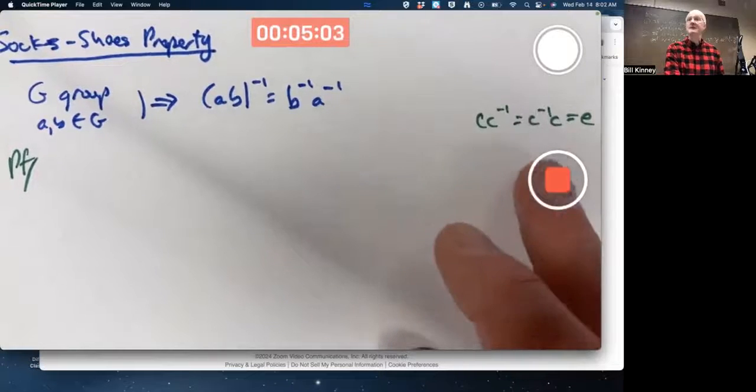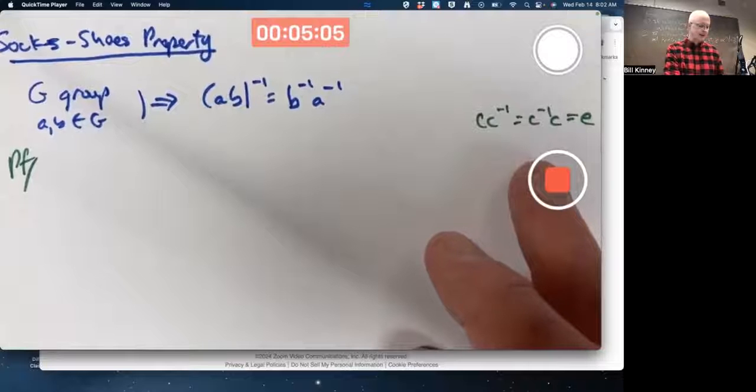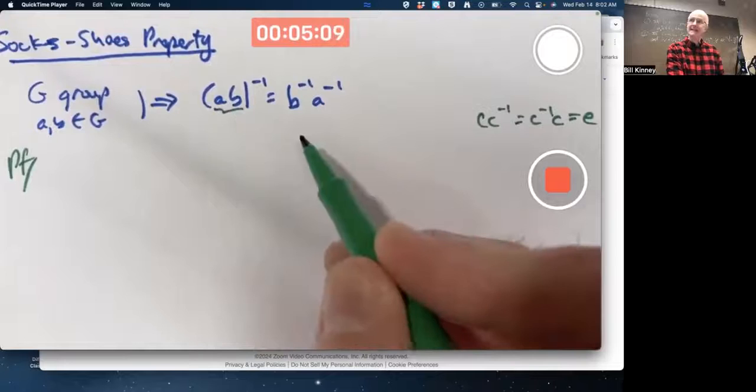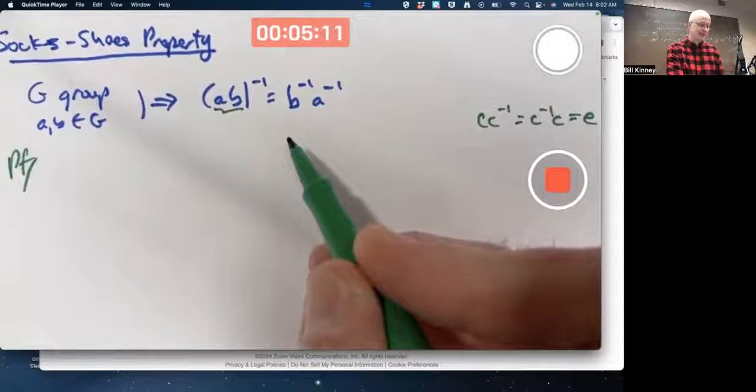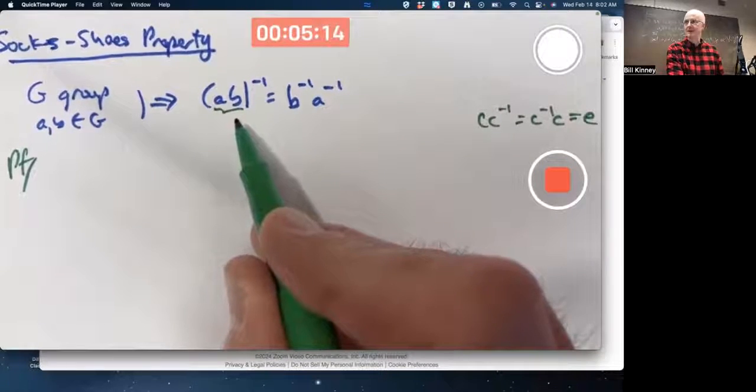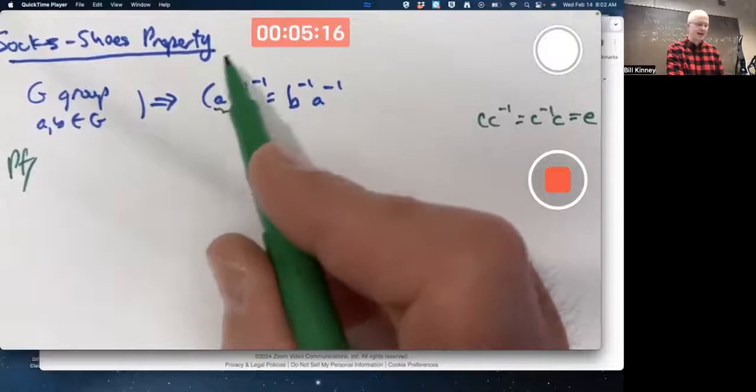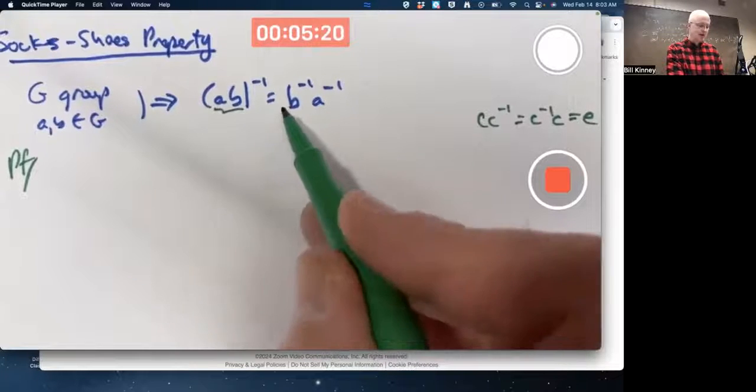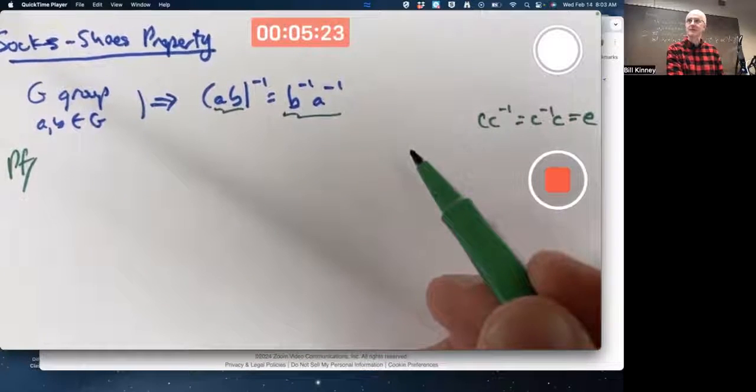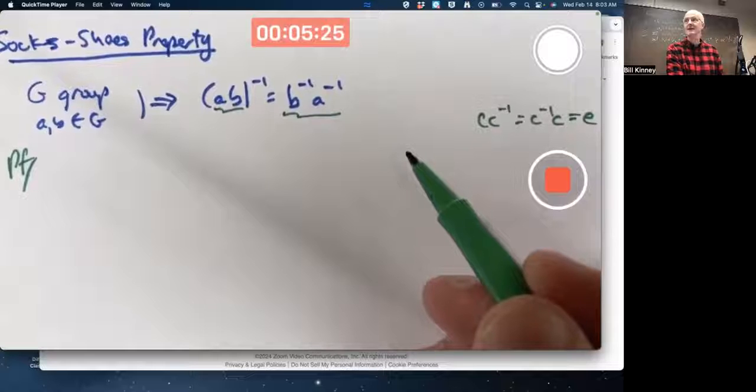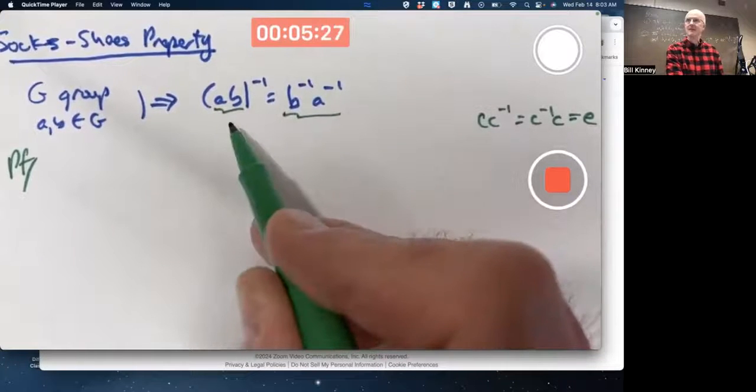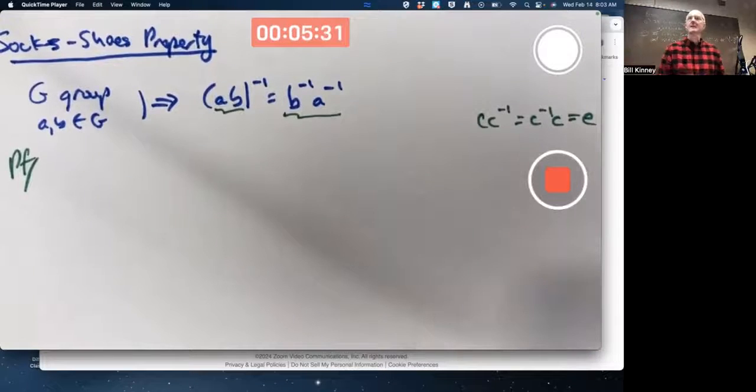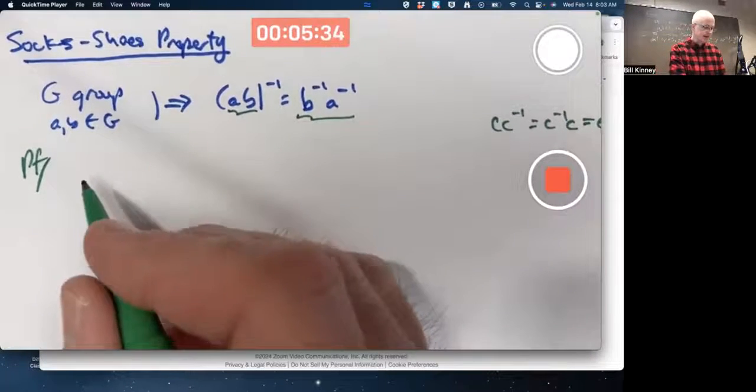But we can go ahead and verify that these both equal the identity when C is A times B. I shouldn't use this symbol for it, because I already know that entire symbol represents the inverse of A times B. I'm trying to show this thing is the inverse of A times B. So that's what I better multiply by A times B to see that I get E. For sake of time, I won't write sentences, but here's the idea.